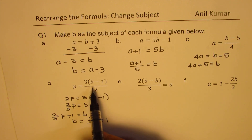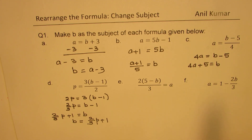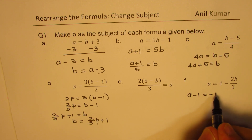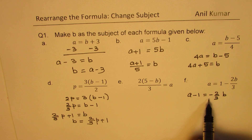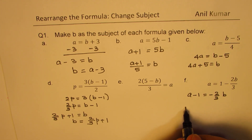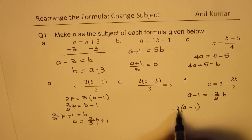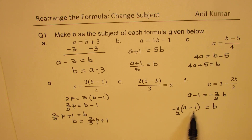Part E is very similar to what we just did, so you can try that out. For the last one, part F, we need to isolate B. It is better to do minus 1 first, so we get A minus 1 equals to negative 2 over 3P. The reverse operation of negative 2 over 3 times B is to multiply by negative 3 over 2, which makes the right side just B. That becomes the answer for part F.